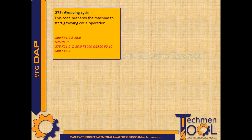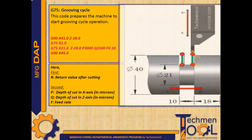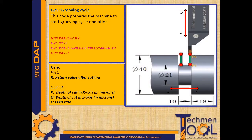G75 grooving cycle. This code prepares the machine to start grooving cycle operation. In the following program, tool rapidly moves to X41 Z-18 position. After that rapid movement, grooving cycle starts. R1 in the first pink colored block represents the return value after cutting. In the second pink colored block, P represents depth of cut in X axis in microns, Q represents depth of cut in Z axis, and F represents feed rate.